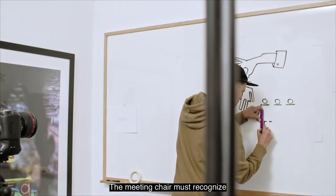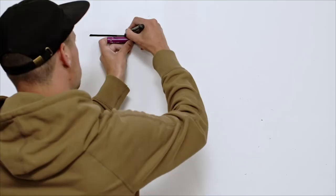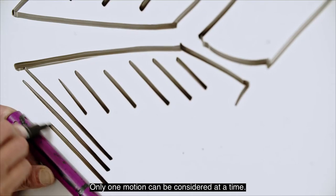The meeting chair must recognize a member before they speak. Only one member can comment at a time and must keep to a time limit. Only one motion can be considered at a time.